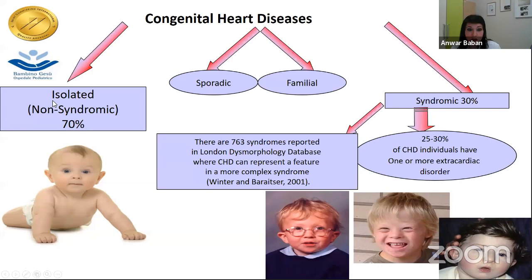The majority of congenital heart diseases are isolated, however this depends on which part of the world you see patients, because consanguinity can increase complex forms. Syndromic patients represent almost one third of these patients, and there are more than hundreds of different diagnoses and syndromes.